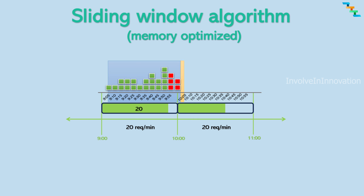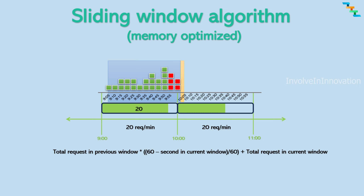There is a memory-efficient variant of sliding window rate limiting. Here individual request timestamps are not captured. Instead, the number of processed requests in the previous window is captured and we assume a constant rate of requests during the previous fixed window period. For example, if we have 20 requests in the previous fixed window, it is treated as a constant rate of one request every three seconds. When the first request comes in the current window, the requests in the current window are added with the previous sliding window percentage.